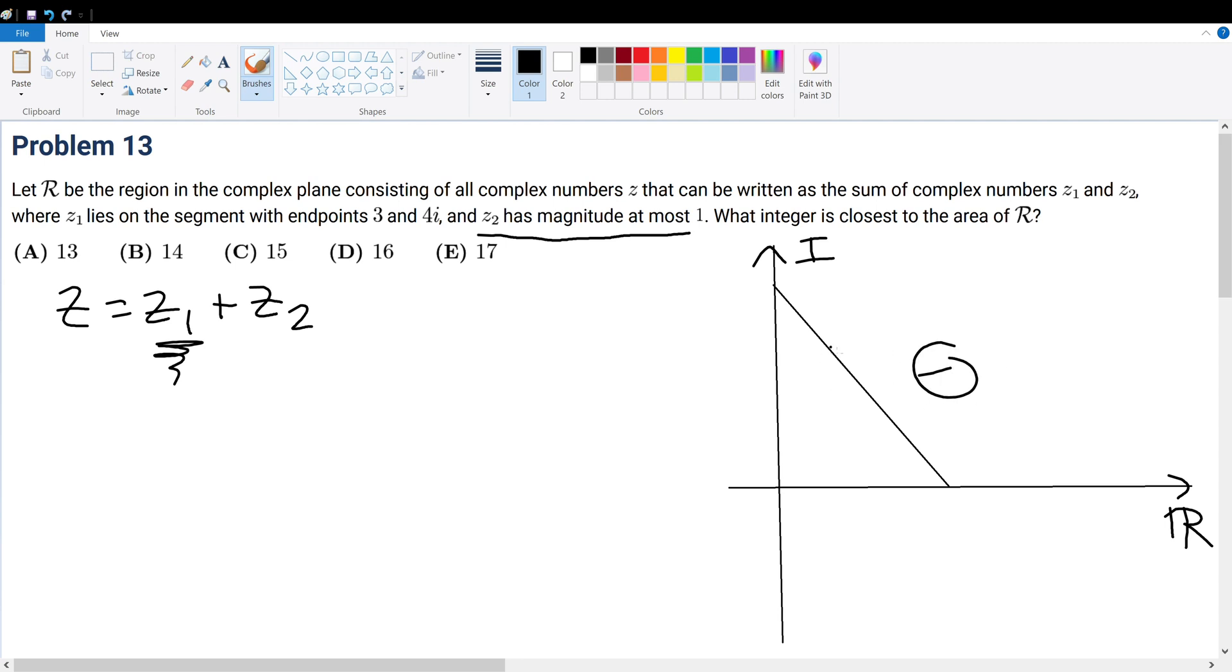Because again, z₂ is a complex number, it's on the complex plane, therefore it would work. So in other words, I can shift this line to touch on this original line that represents all points in the z₁ complex term.